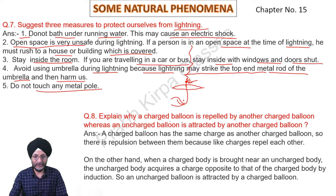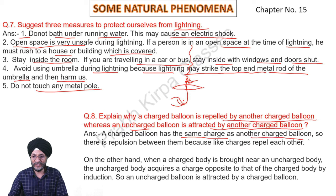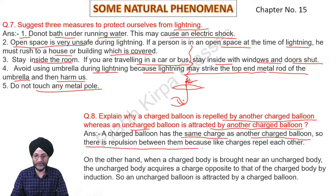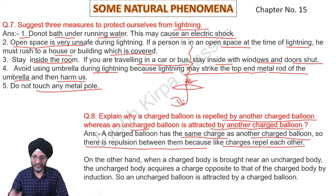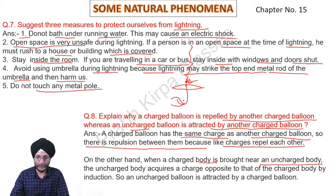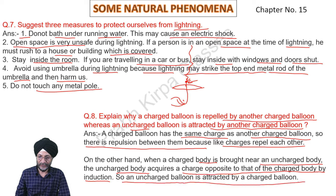Question 8: Explain why a charged balloon is repelled by another charged balloon whereas an uncharged balloon is attracted by another charged balloon. A charged balloon has the same charge as another charged balloon, so there is repulsion because like charges repel each other. On the other hand, when a charged body is brought near an uncharged body, the uncharged body acquires a charge opposite to that of the charged body by induction, so an uncharged balloon is attracted by a charged balloon.